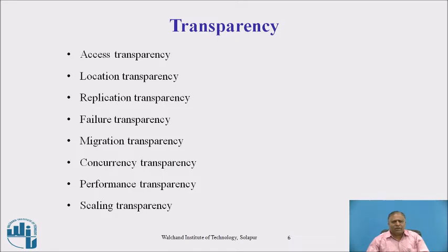Transparency. The following are the different types of transparency: access transparency, location transparency, replication transparency, failure transparency, migration transparency, concurrency transparency, performance transparency, and scaling transparency. Now briefly, we are going to see each and every type of transparency.